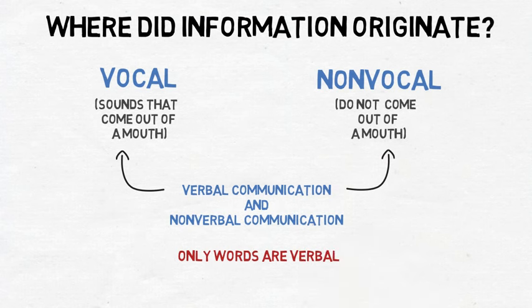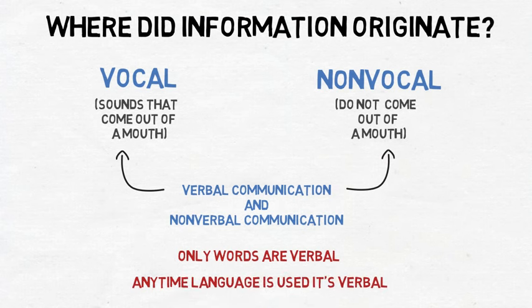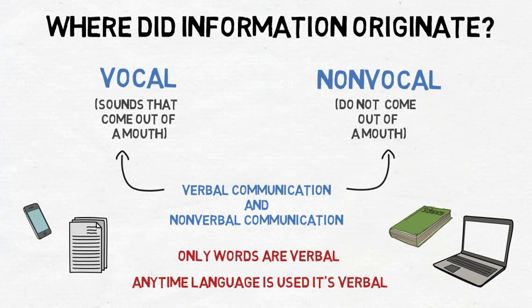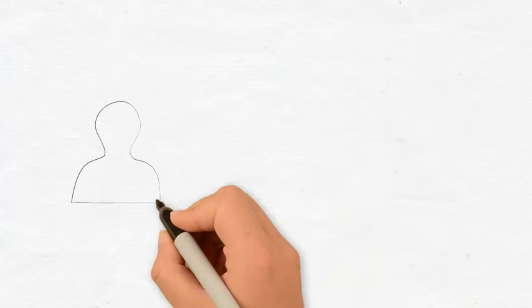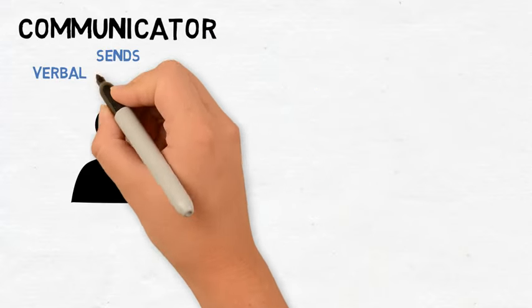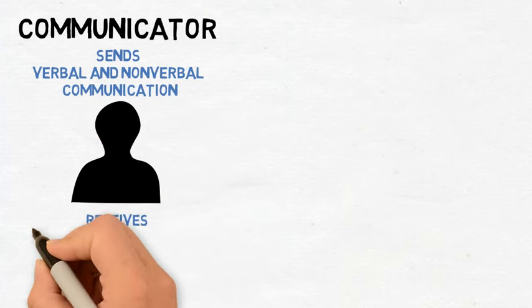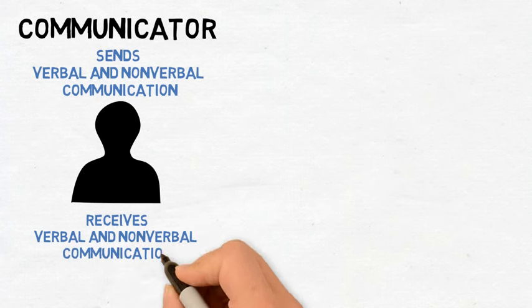All other sounds that come out of the mouth are classified as non-verbal because they are not symbols. On the other hand, another common mistake is thinking that all verbal communication must originate from the mouth. Any time words and language are used, they are classified as verbal communication. Thus, words in mobile texts, term papers, books, and on computer screens are all classified as verbal communication. How words are presented and look is considered non-verbal communication. As a communicator sends both verbal and non-verbal forms of communication vocally and/or non-vocally, that communicator also receives these forms of communication from others as well.